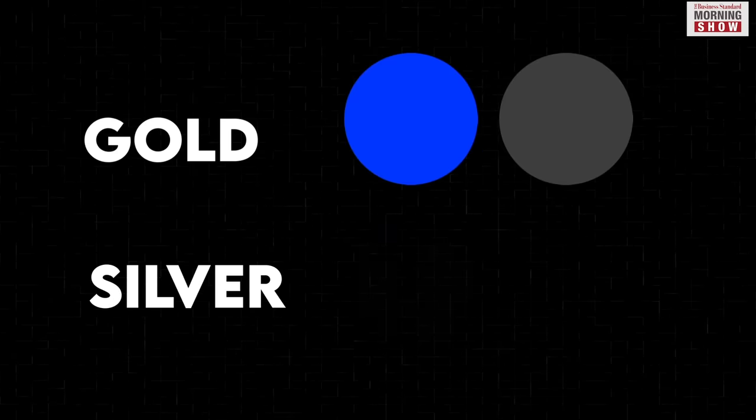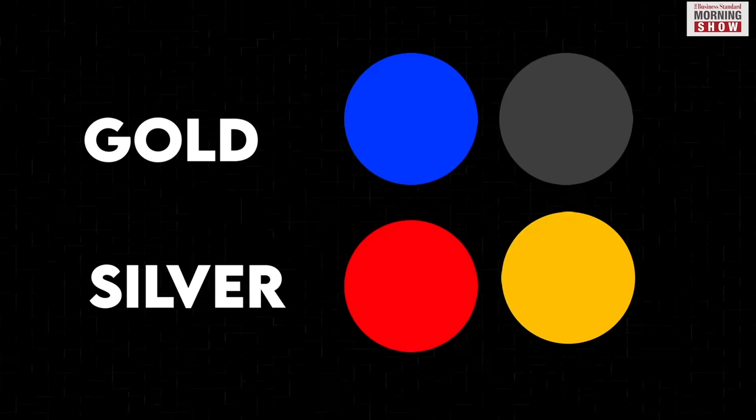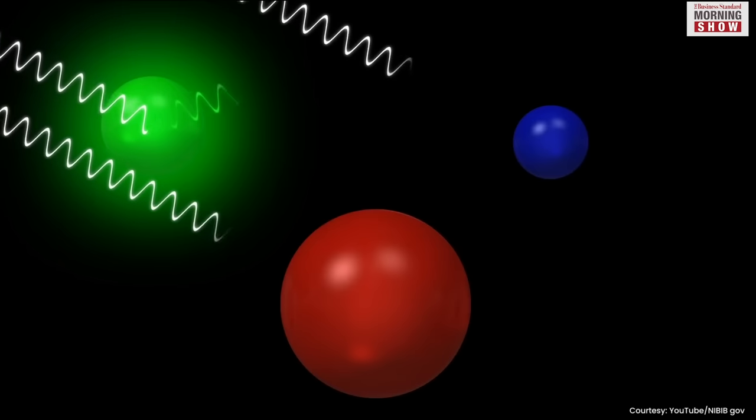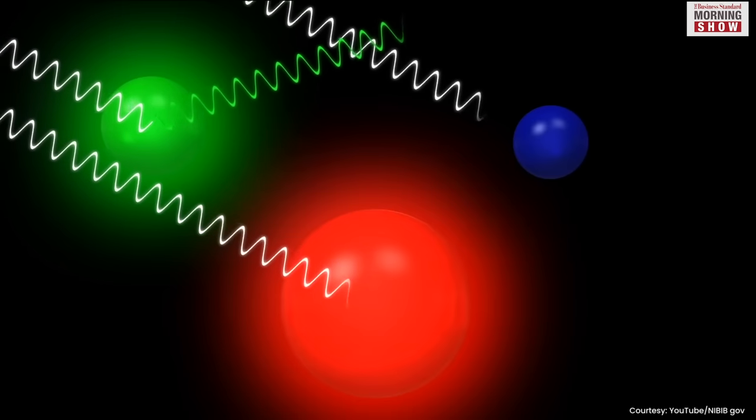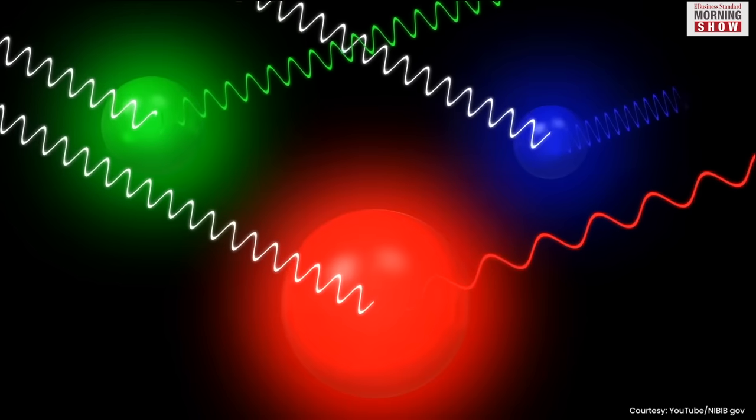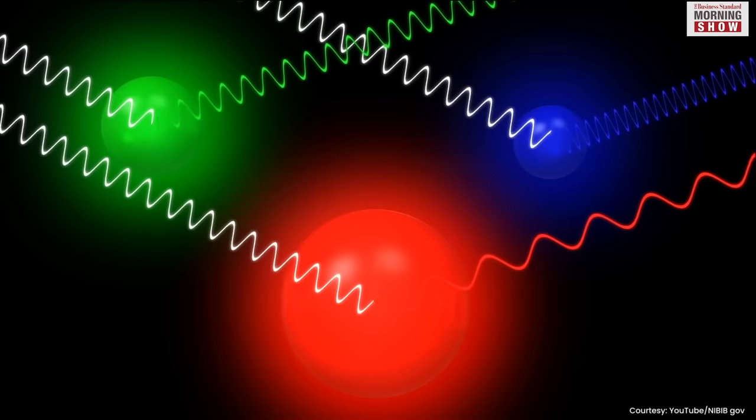Gold can appear dark blue or gray while silver can appear red or amber colored. Likewise, one of the key characteristics of quantum dots is their size-dependent optical properties. Larger quantum dots emit longer wavelengths of red light.